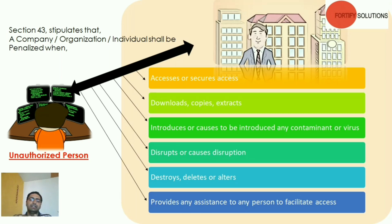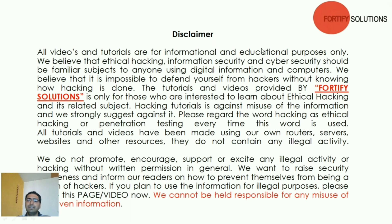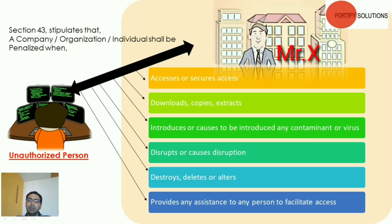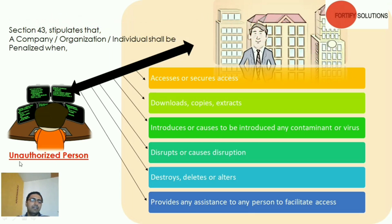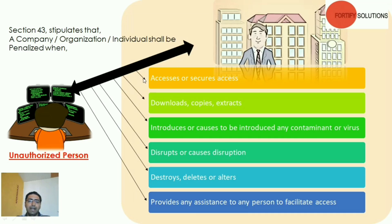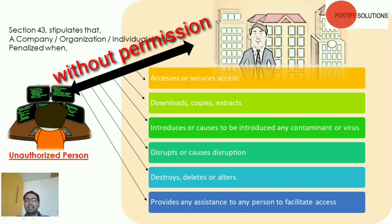To understand what exactly Section 43 is all about, we take an example. Suppose we have an IT company in which Mr. X is the authorized person to maintain the company server, database, or network. We also have an unauthorized person.